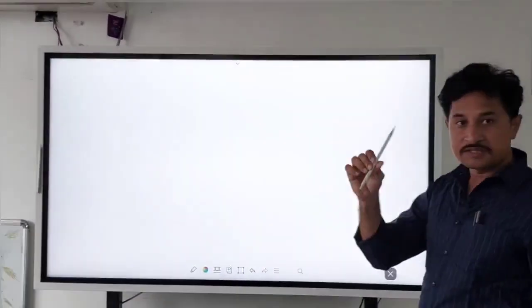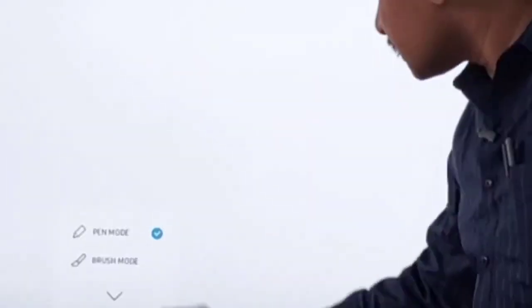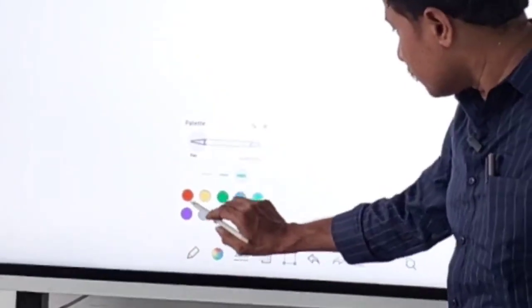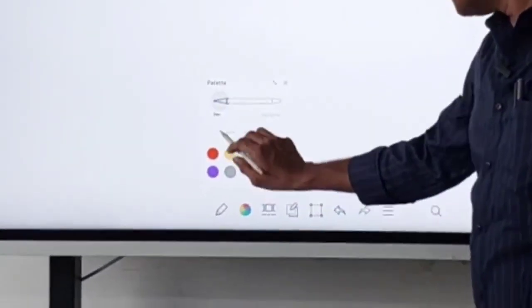You can click on the stylus, the pen and brush mode. We select colors. You can click on the pen.